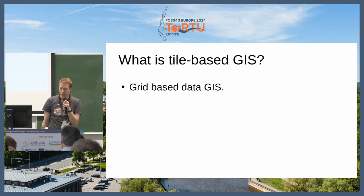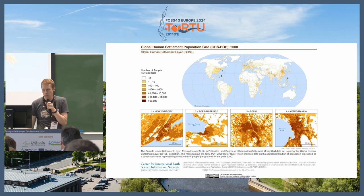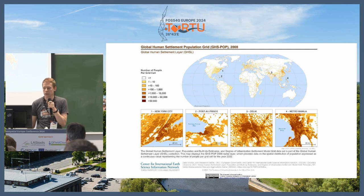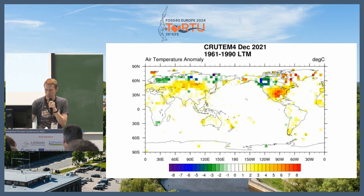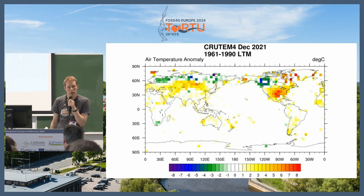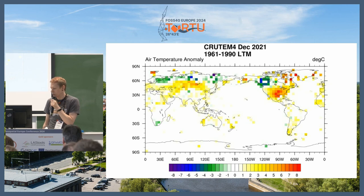So what is a tile-based GIS? It's in the family of grid-based data GIS. A few examples to give you an idea: this is the population grid, global human settlement layer, that gives an estimation about population in the world in a grid. You want to have this for global datasets because you can store them more efficiently. Another example would be environmental monitoring data on a global scale. Oftentimes those grids are based on 30 arc seconds or some other division.